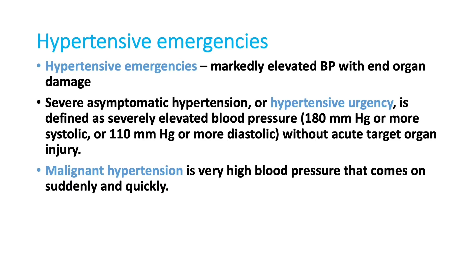Acute cardiac failure, acute stroke, acute hemorrhage — these all constitute hypertensive emergency. Hypertensive urgency means very high BP without acute target organ injury; there can be a history of previous episodes of target organ injury, but the patient does not currently have acute target organ damage. Malignant hypertension means high BP that occurs suddenly and quickly.